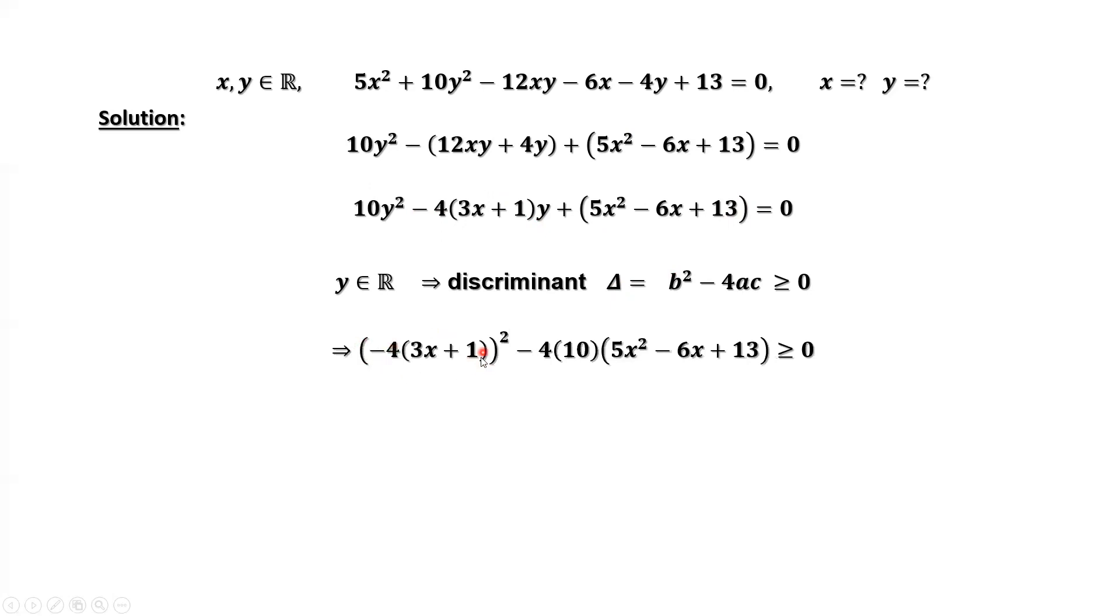b² - 4ac. Look at this part. Negative 4 squared, that's 16. 4 times 10, that's 40. Both have 8 as a factor. Both sides, we can simplify and divide by 8.